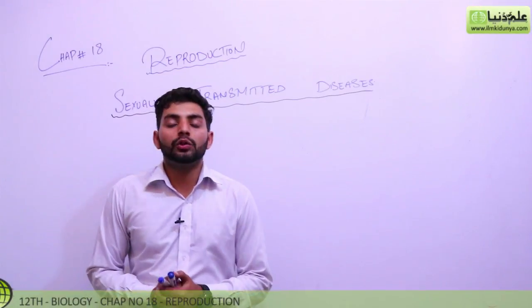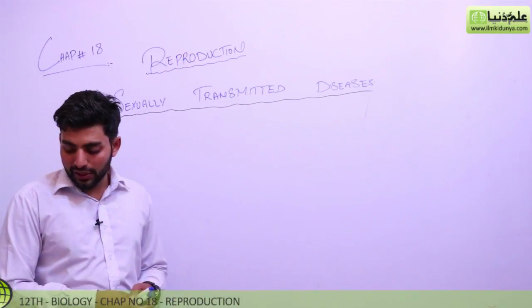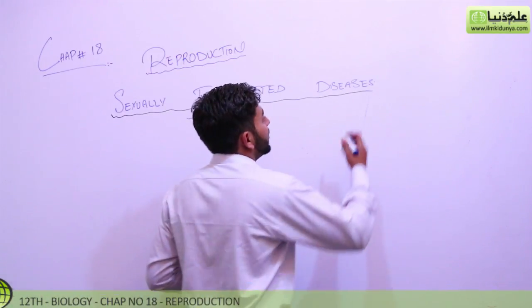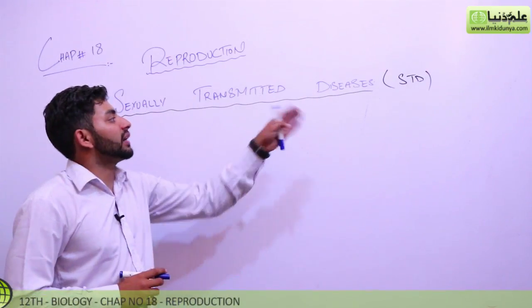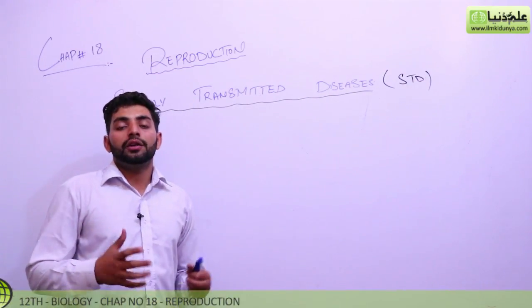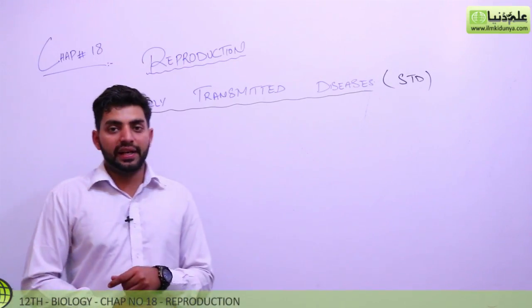Okay guys, our next topic related to reproduction is sexually transmitted diseases. This is commonly abbreviated as STD. STDs are basically sexually transmitted diseases which are problems that can occur during sexual intercourse. Now we will discuss these as given in your book.